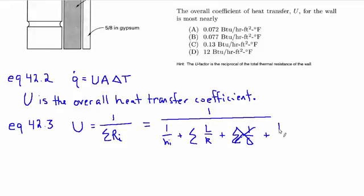And lastly, there's the outside film coefficient that has to be accounted for. Okay, so this is the most general form of how to find the U-factor.